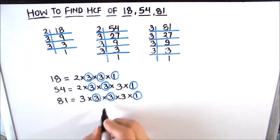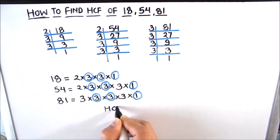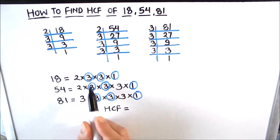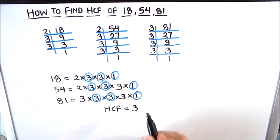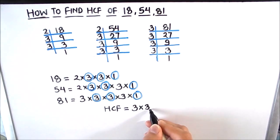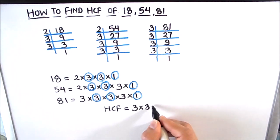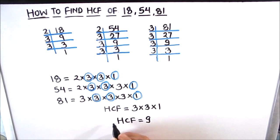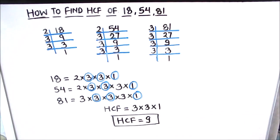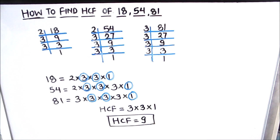So the HCF of the three numbers is found by taking the product of their common factors. The first common factor is 3, and another common factor is 3, so we take 3 times 3. The next common factor is 1, which is common to all numbers. Therefore, the HCF is 3 × 3, which equals 9. So the HCF of 18, 54, and 81 is 9.